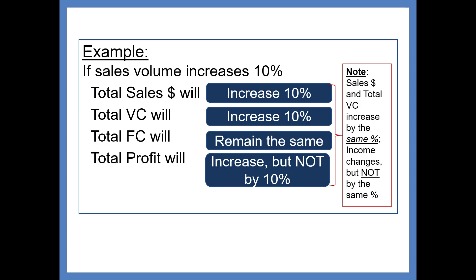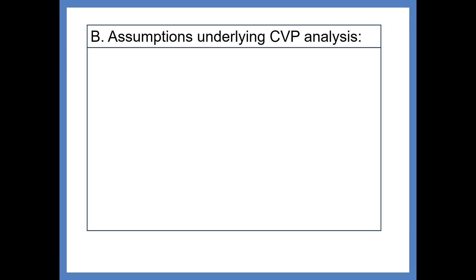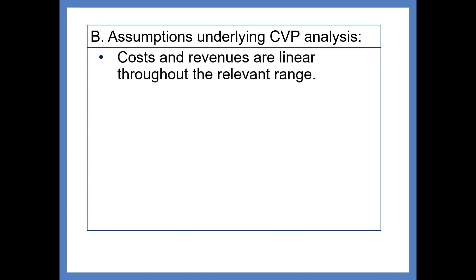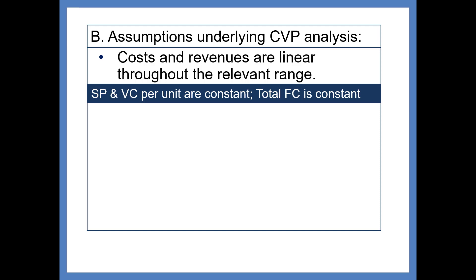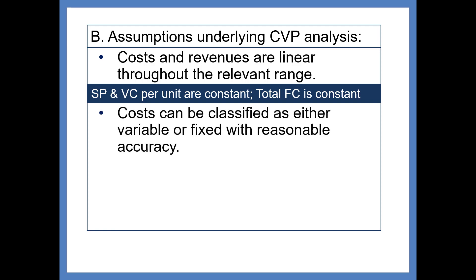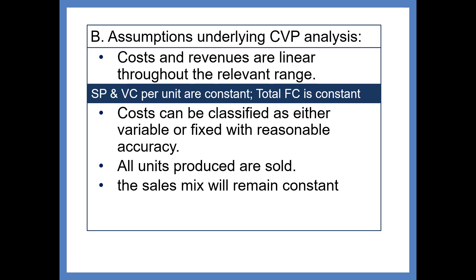Notice that sales and variable cost will increase by the same percentage and income will increase, but not by the same percentage. As we conclude the topic, we will understand better what percentage profit will increase. There are some underlying assumptions. First, you have to assume costs and revenues are linear throughout the relevant range, meaning the sales price and variable cost per unit are constant and total fixed cost is constant. Also, costs can be classified as either variable or fixed with reasonable accuracy — methods like the high-low method will help identify the fixed and variable components of a mixed cost. We have to assume all units produced are sold.